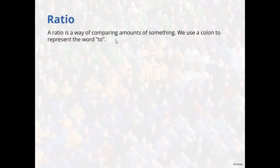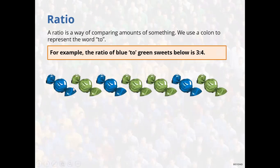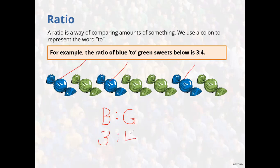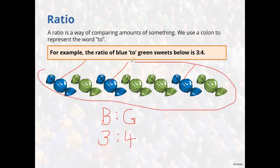A ratio is a way of comparing amounts of something. We use a colon to represent the word 'to.' For example, look at these sweets: the ratio of blue to green sweets. How many blues are there? Three blues. How many greens? Four greens. Altogether there are seven sweets, so blue to green is three to four.